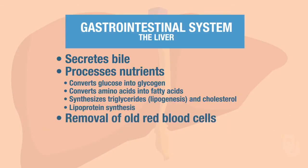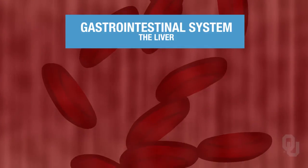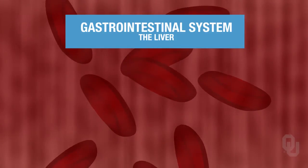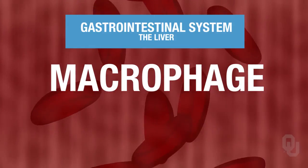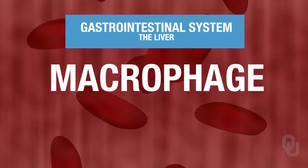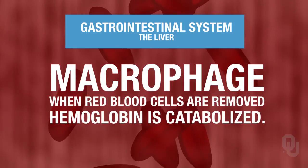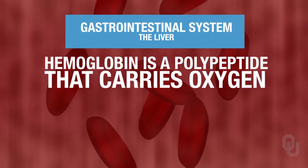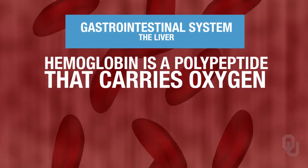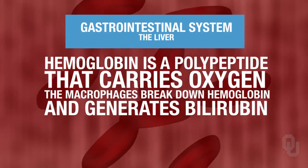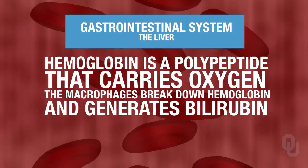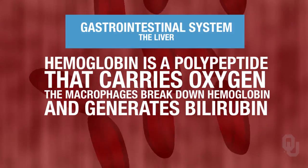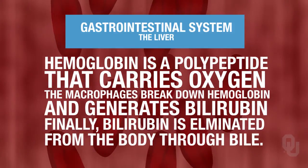The liver also removes old red blood cells, as does the spleen — we'll talk about the spleen's role later. This removal of red blood cells is carried out by a type of white blood cell called a macrophage. When we remove old red blood cells, we metabolize hemoglobin. Hemoglobin is a polypeptide that carries oxygen. These macrophages break down hemoglobin, which generates bilirubin, and bilirubin gets eliminated as bile from our body.